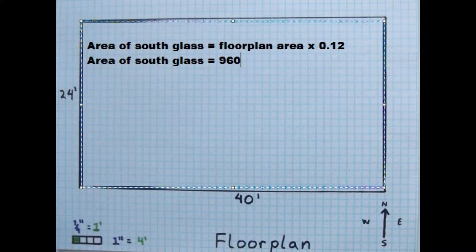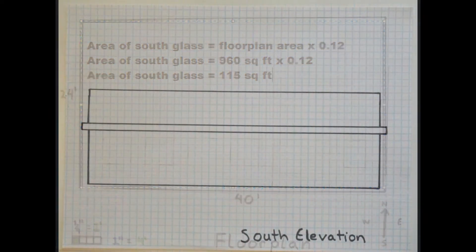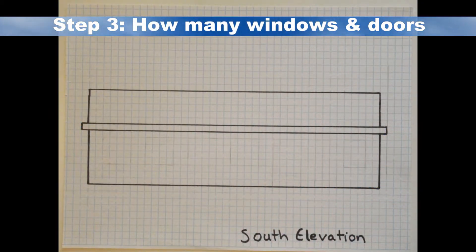This estimate is not an exact number, but a goal to strive towards. For this house to have adequate passive solar heat gain, we want the total area of all the windows and glass doors on the south side to be about 115 square feet. Now it's time to decide how many windows and doors you want.